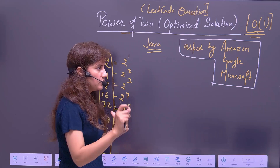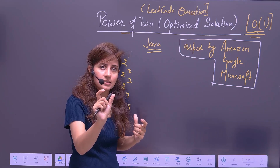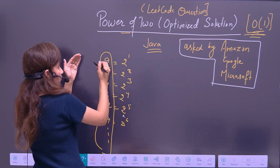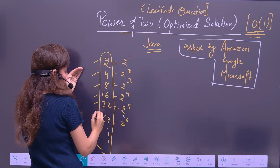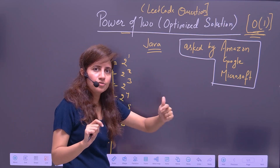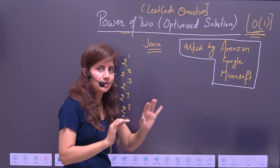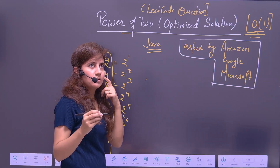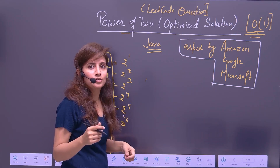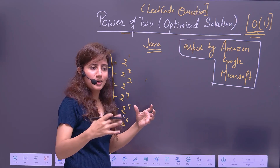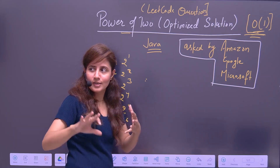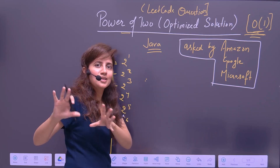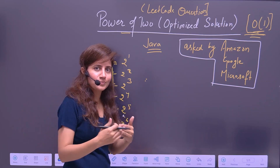Bitwise operators work on the individual bits of the operands. If you convert all the numbers which are power of two into binary representation, you will definitely get a pattern. You might wonder how to know to use bitwise operators — obviously you have to practice questions, around 100 to 150 questions, and then you'll come to know what the pattern and approach should be.